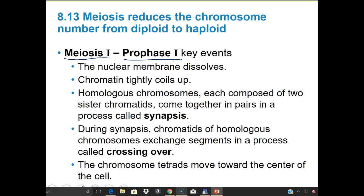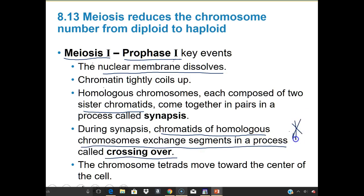In meiosis I, prophase I is probably the most densely packed stage. The nuclear envelope dissolves, chromatin tightly coils up into chromosomes. Homologous chromosomes, each composed of two sister chromatids, come together in pairs in a process called synapsis. Chromatids of homologous chromosomes then exchange segments in a process called crossing over — which is key — and crossing over happens in prophase I.